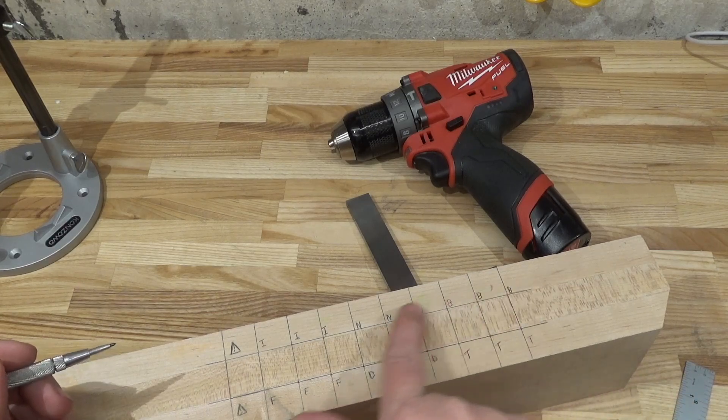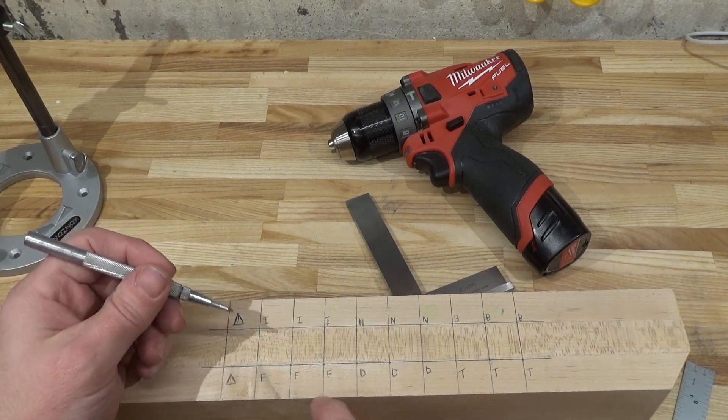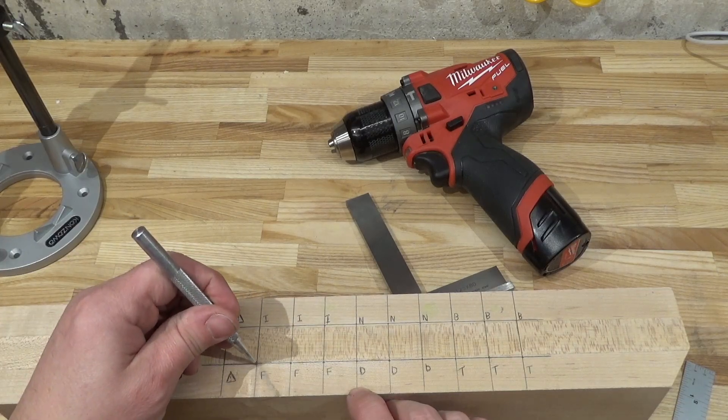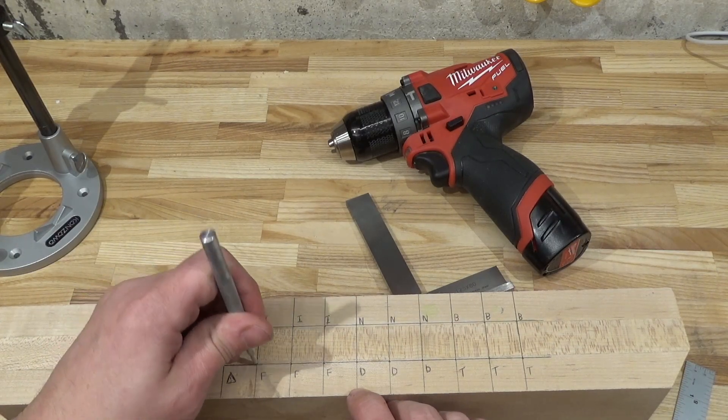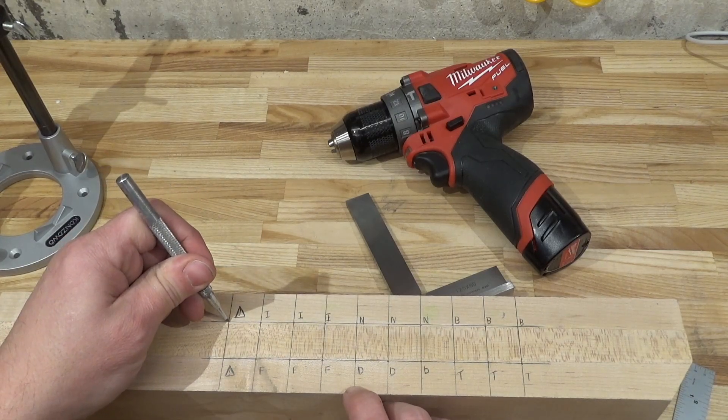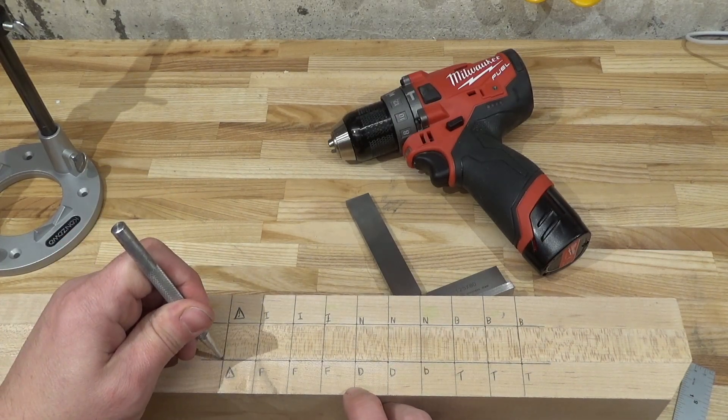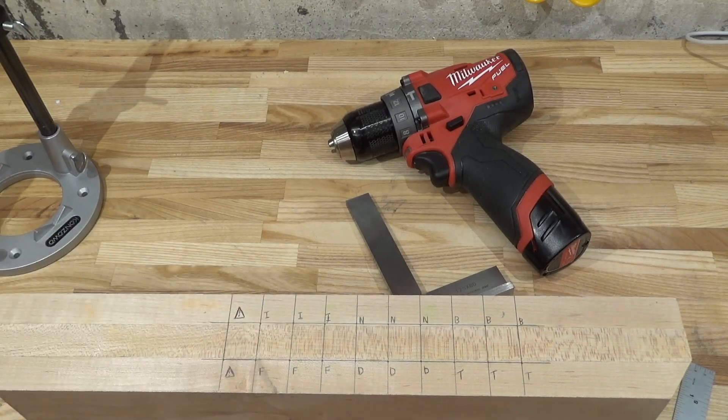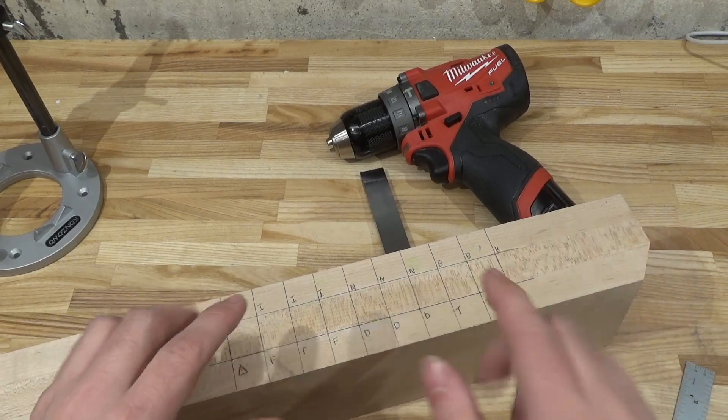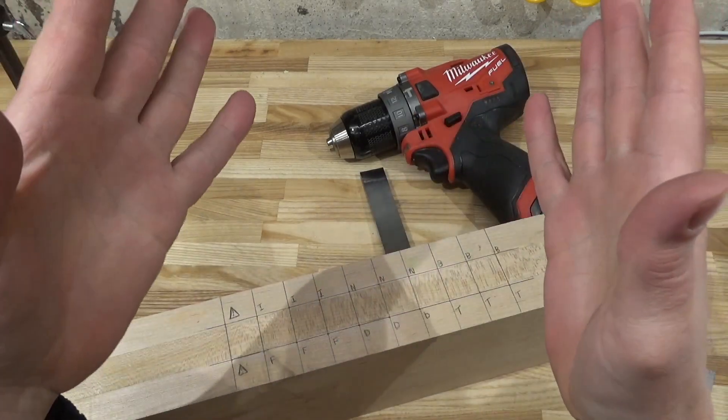I have some lines here, as well as I've already put little punch craters in at the intersections of these lines, and we will be testing a variety of bits. I have three holes for each bit—replication, science, you know.